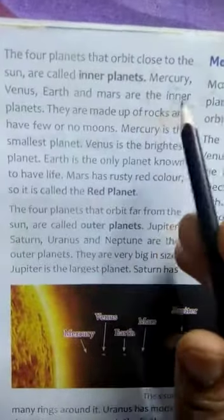The four planets that orbit far from the sun — chaar grah hain jo ki Surya se bahut door parikrama karte hain — are called outer planets. Jupiter, Saturn, Uranus and Neptune are the outer planets. They are very big in size — ye aakar mein bahut bade hote hain.